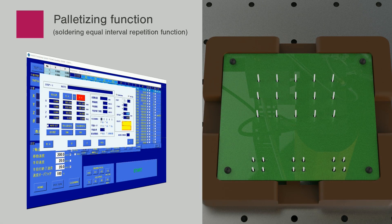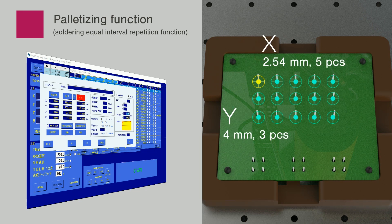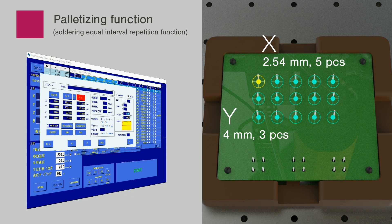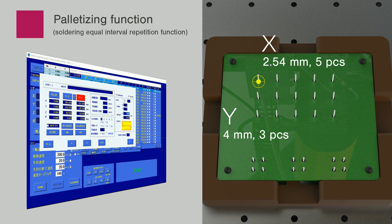The palletizing function enables the setting of the positioning in the same manner by simply inputting positions of the initial soldering point from the points in the same interval such as those in a connector and the distance and amount of travel. It eliminates positioning of entire points.